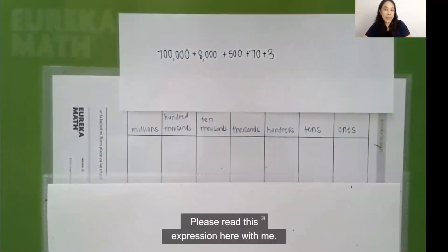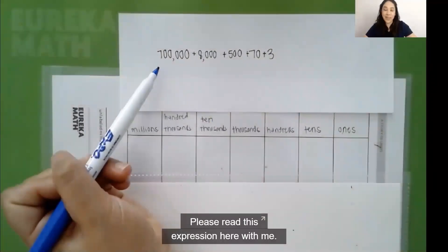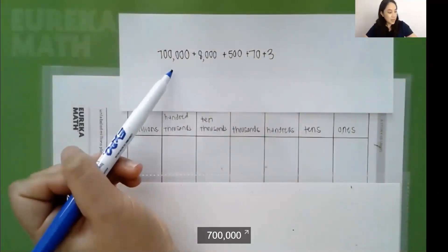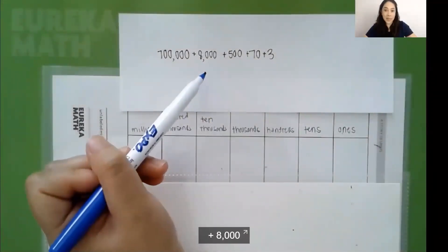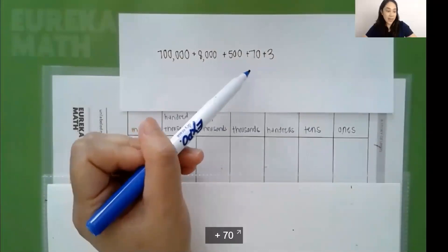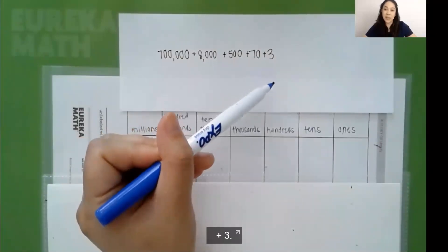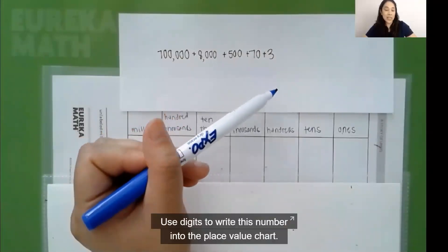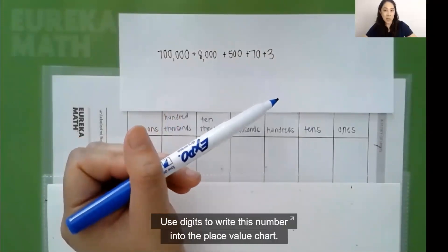Please read this expression here with me. 700,000 plus 8,000 plus 500 plus 70 plus 3. Use digits to write this number into the place value chart.